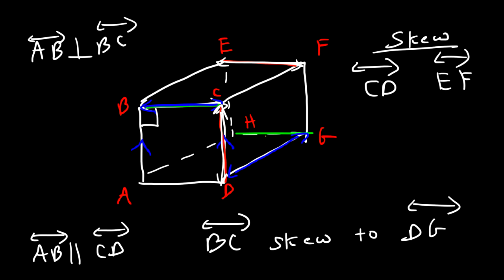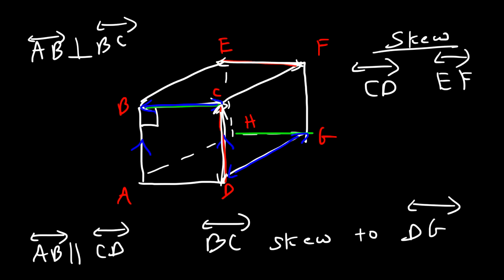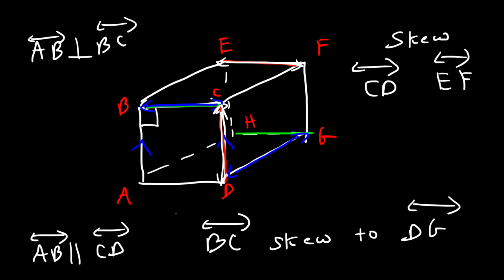If we look at CD and extend it, CD and EF will never intersect. EF is going one way and CD is going another way. It may appear that they intersect, but in reality if you actually draw those two lines they do not intersect. The same is true for BC and DG — these lines should never intersect, so those are skew lines.